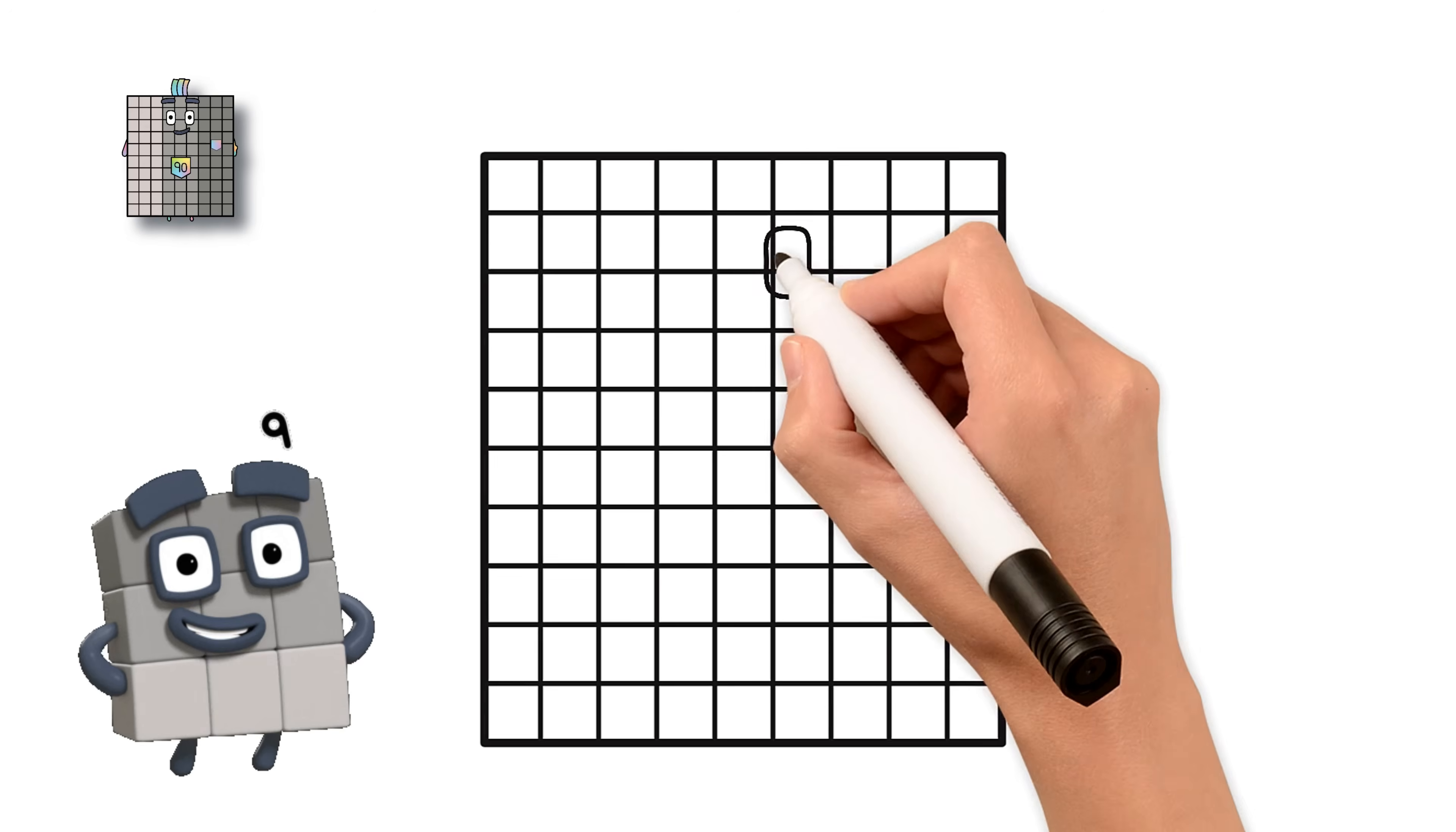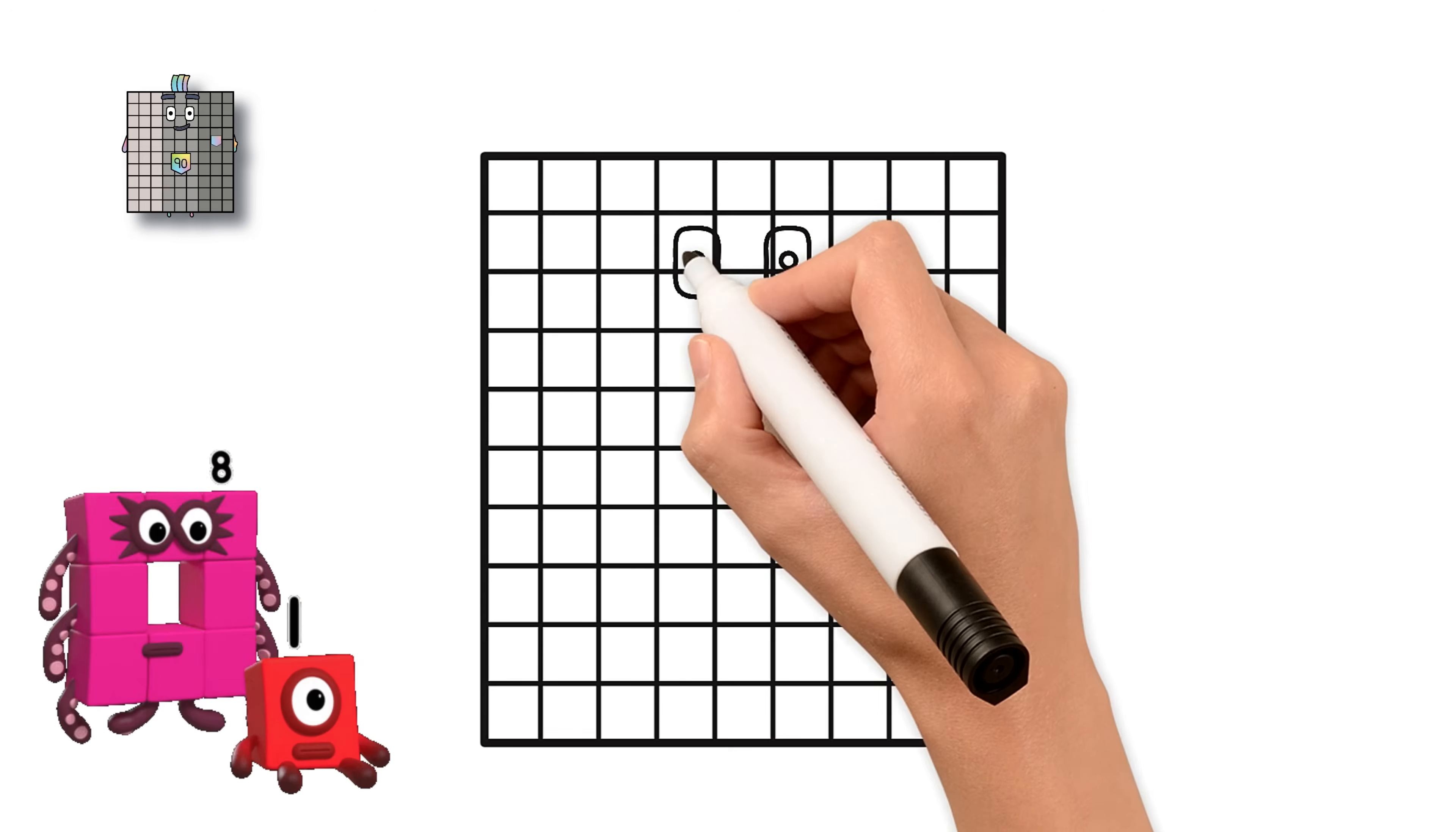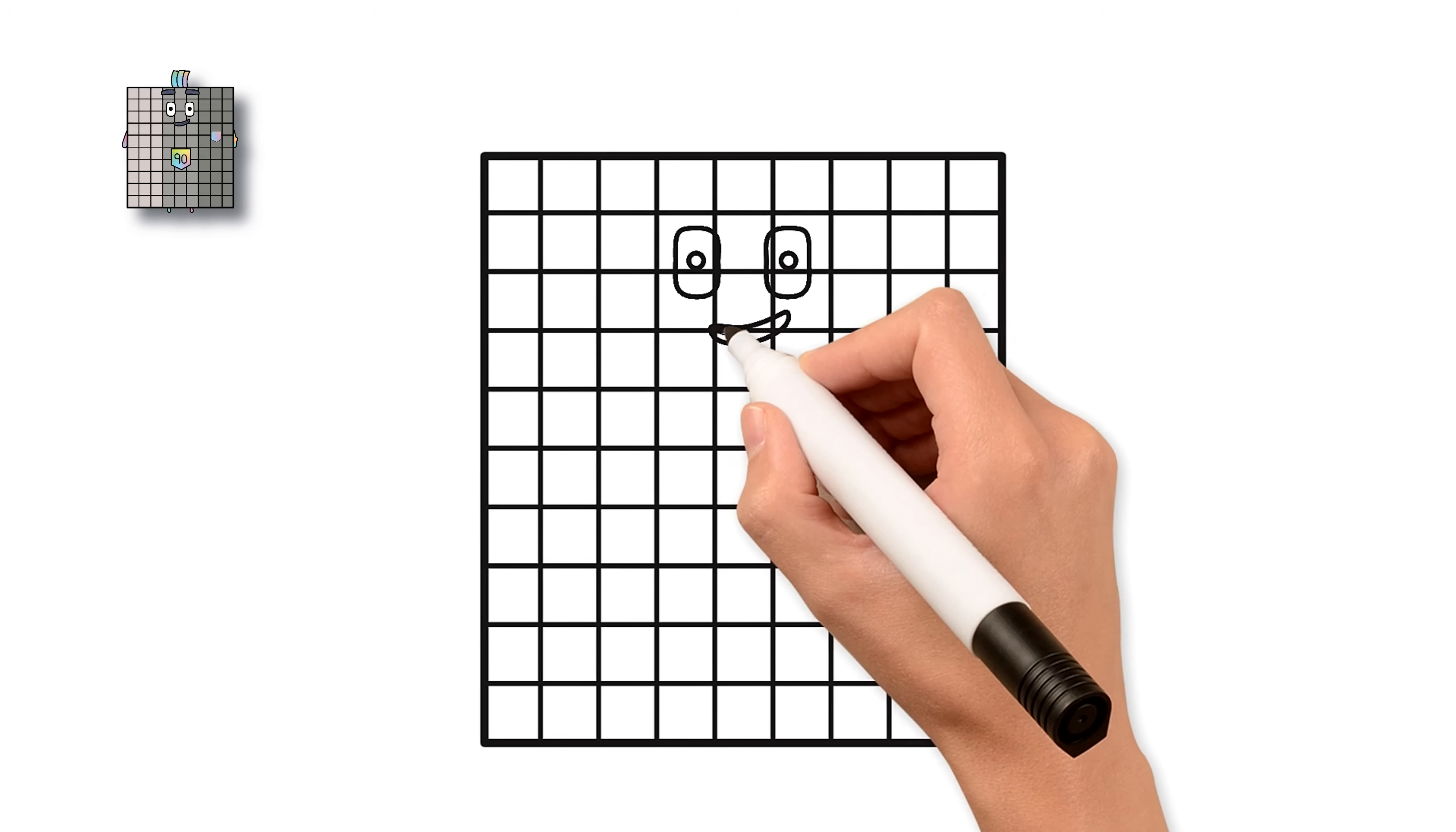Now let's draw the face. Move to the second row from the top. Draw 2 big square eyes right in the middle. Add little pupils inside the eyes to make them look happy. Now draw the smile just under the eyes. Just above the eyes, draw 2 big eyebrows.